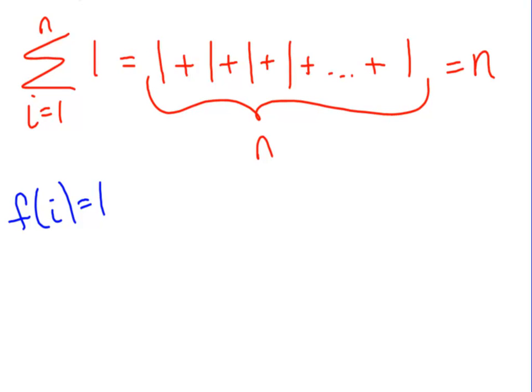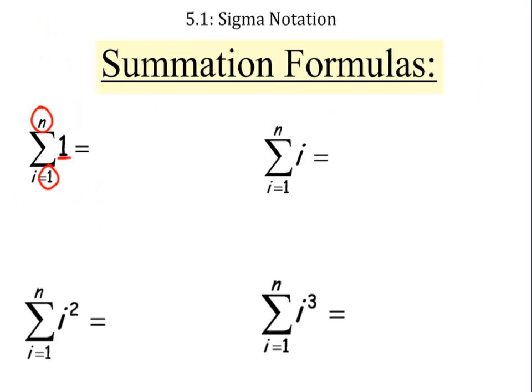You add up 1, n times, you're going to get n. So we won't ever have to do that again. From now on, if you see i goes from 1 to n of 1, you just know it's n.